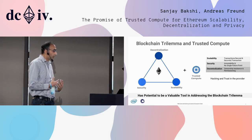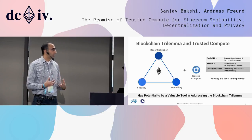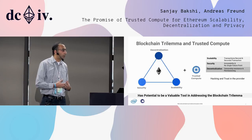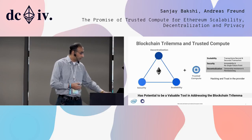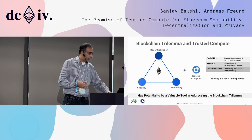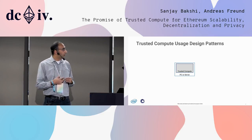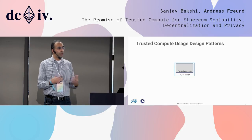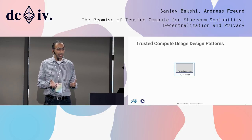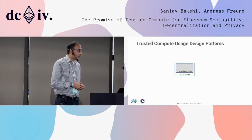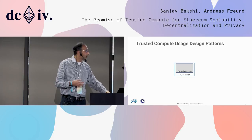In general, we believe that trusted compute, used in particular ways, can be a very helpful tool in addressing and easing the trilemma problem that we have in blockchains — helping it get deployed easily in some cases. Before jumping into the ideas, let me quickly level-set a common design pattern. You have a trusted compute — it can be in a PC or in a server — and you have some function that you can deploy to it.